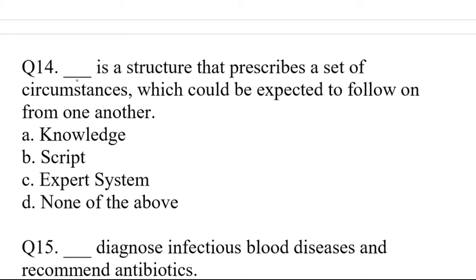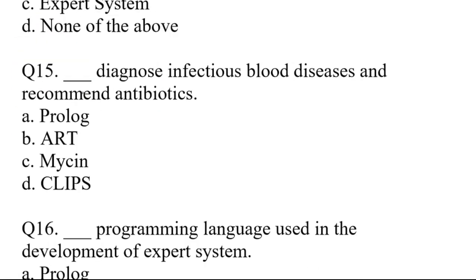Question number 15. Dash is a structure that describes a set of circumstances which could be expected to follow on from one another. A. Knowledge, B. Script, C. Expert system, D. None of the above. Right answer is option B. Script.